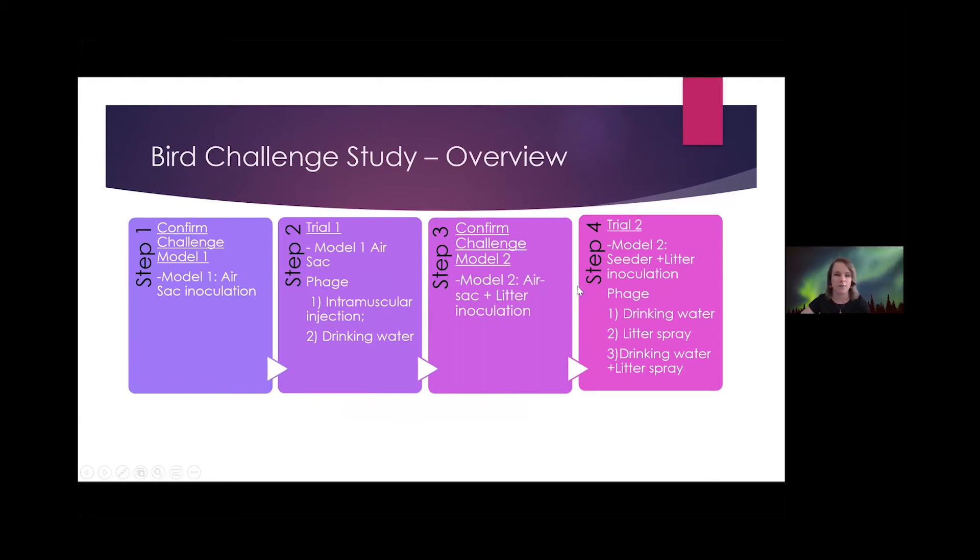In our future studies, we're going to be utilizing a series of steps for our in vivo model. The first is we're just going to challenge our birds via an air sac inoculation model with our APEC strains to make sure they are infective. And then once we've determined that that's true, we plan to utilize phage in intramuscular injection strategies to see if phages can improve disease outcomes.